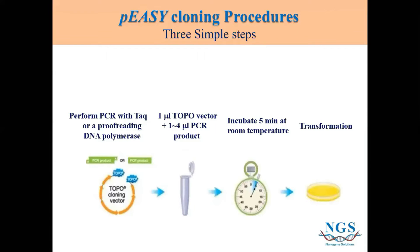Next, I will share the PEZ cloning platform. Here are the three simple steps of PEZ cloning. PEZ cloning kit uses the topo system. When we want to start cloning, we prepare our gene of interest. Step one: mix the topo vector and the PCR product together into a tube. Step two: incubate for five minutes at room temperature. Step three: transformation. Just three simple steps, and you have done the cloning.